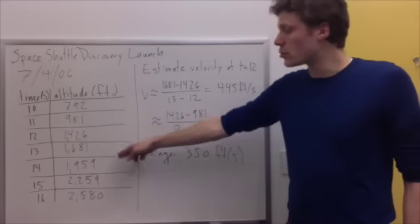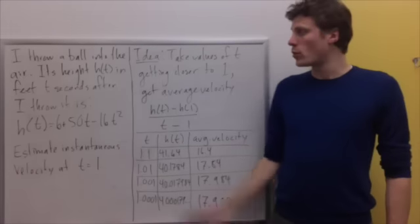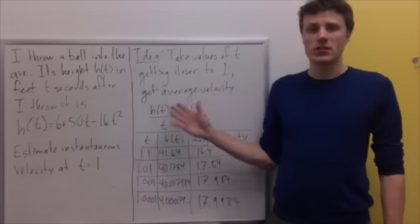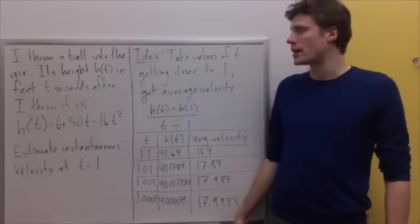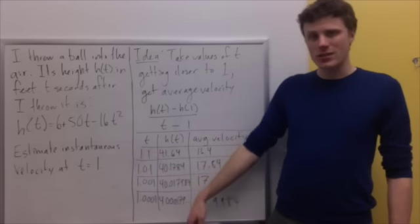But the upshot here is if we want to get a real measure of the instantaneous velocity, we really need to be able to take shorter and shorter time intervals. Okay, so now we're going to do an example where we have a position of an object that's explicitly given as a function of time.